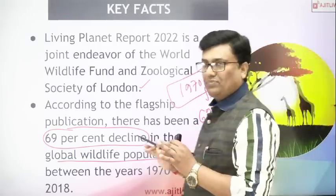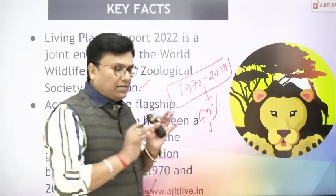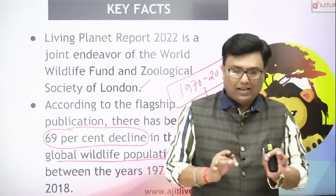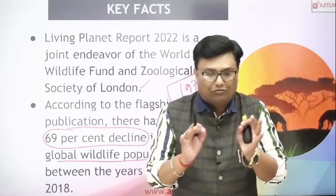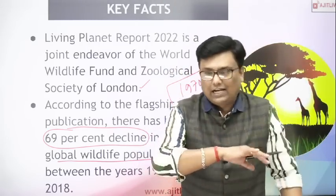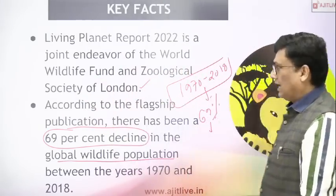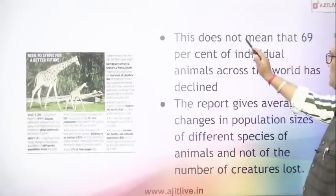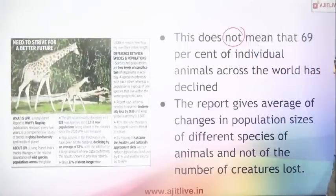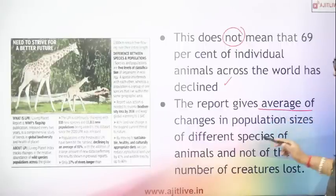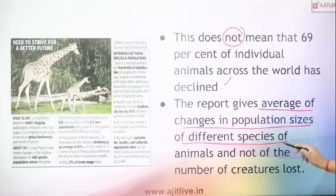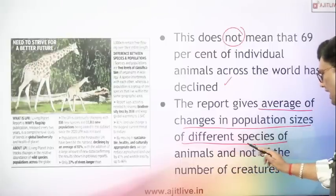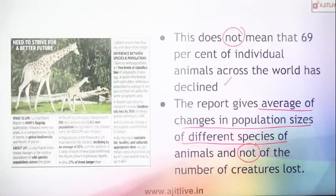Listen very carefully — there is an important clarification here. This does not mean that 69% of individual animals across the world have disappeared. The report gives the average of changes in population size of different species of animals, and not the number of individual creatures lost.